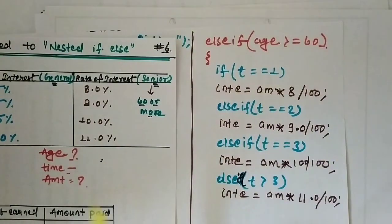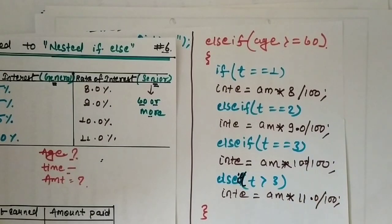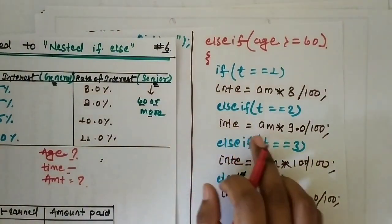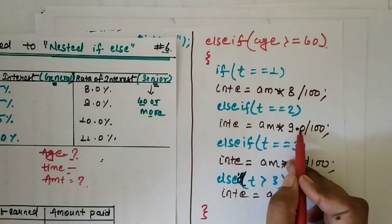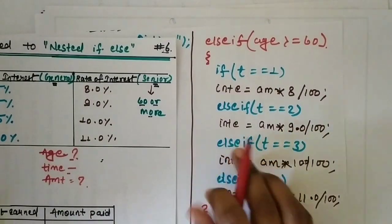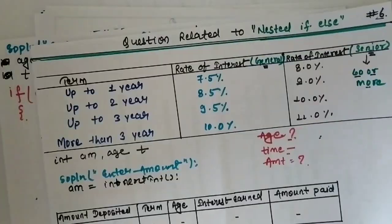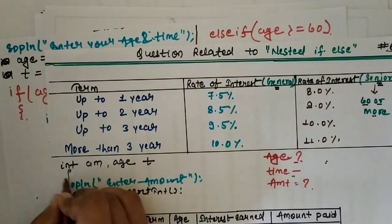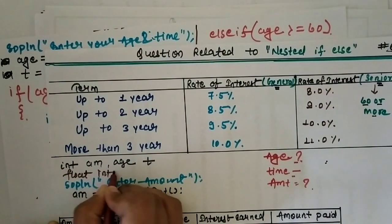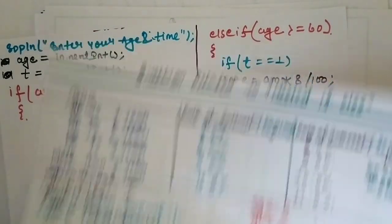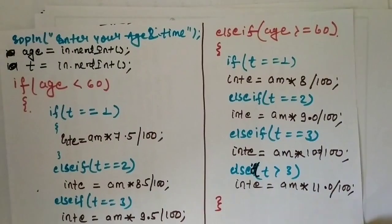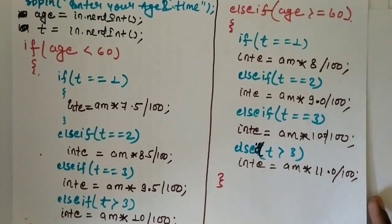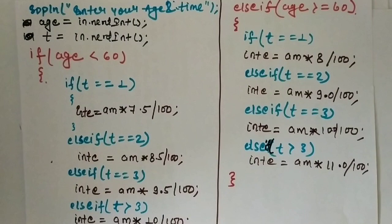Now, what data type is the interest variable? Because we have values like 9.0, 7.5, 8.5, those are float values. So the data type of interest is float. We have to define it properly in our program. We write float for the interest variable. This was our interest calculation when age is less than 60 and when age is greater than or equal to 60.